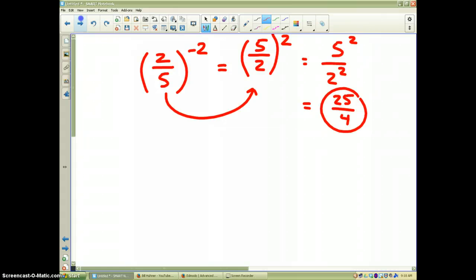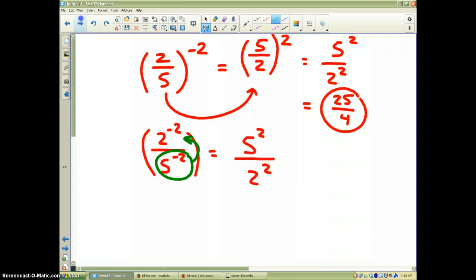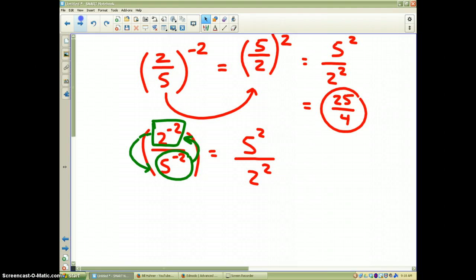Or, I could, from the very beginning, I could write it as 2 to the negative 2 power over 5 to the negative 2 power, and then flip the fraction over, which becomes 5 squared. I'll take the 2 bases, 5 to the negative 2 goes to the top, or the numerator, and then 2 to the negative 2 power goes to the bottom, and the denominator. So, basically, when you have a negative power, it means take its base and the power and move it to the opposite side of the fraction. In either case, I would get 25 over 4 as my final answer.